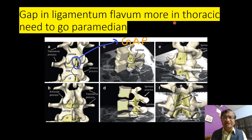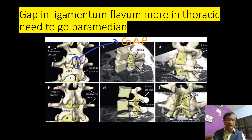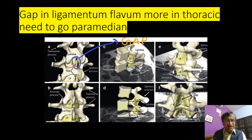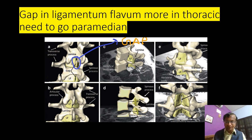The gap in the ligamentum flavum is more pronounced in the thoracic region — that is why we need to go paramedian there, not only because the spines are very sharp, but also because the ligamentum flavum may have some defects in the thoracic region. So more of a paramedian approach is used in the thoracic.